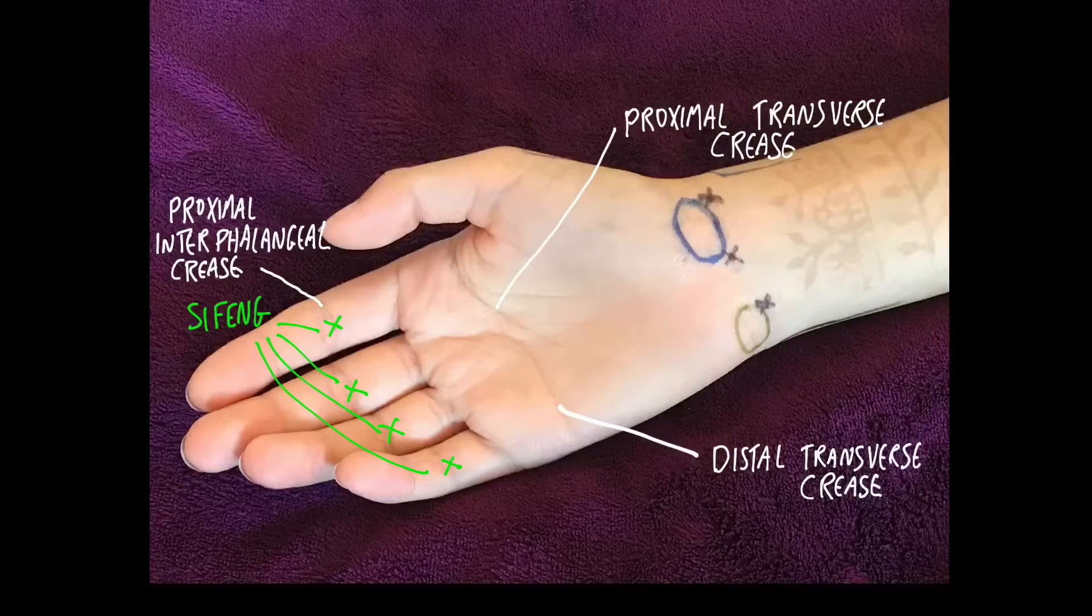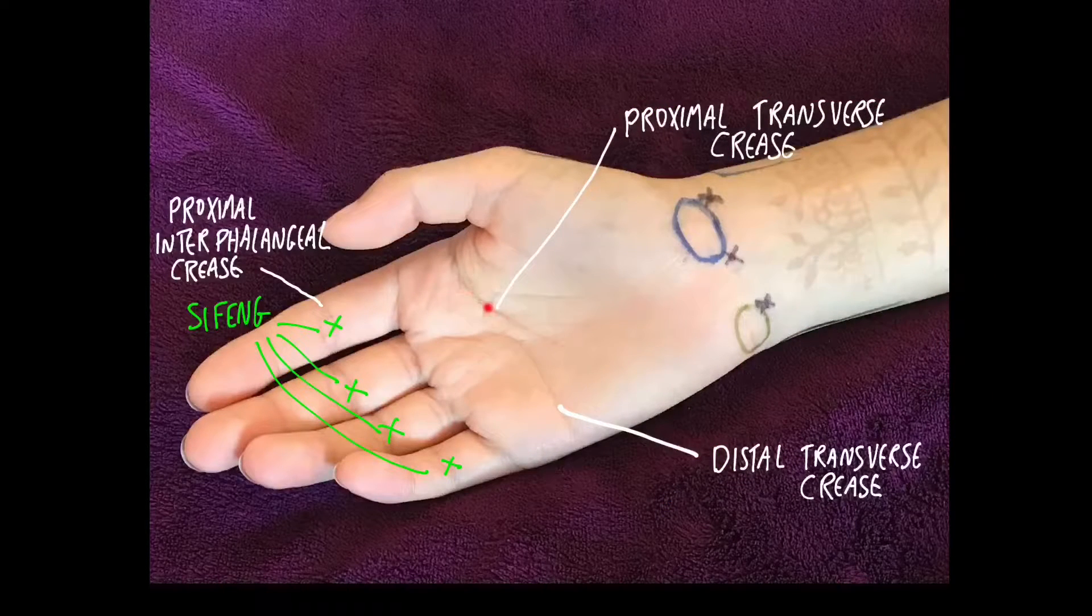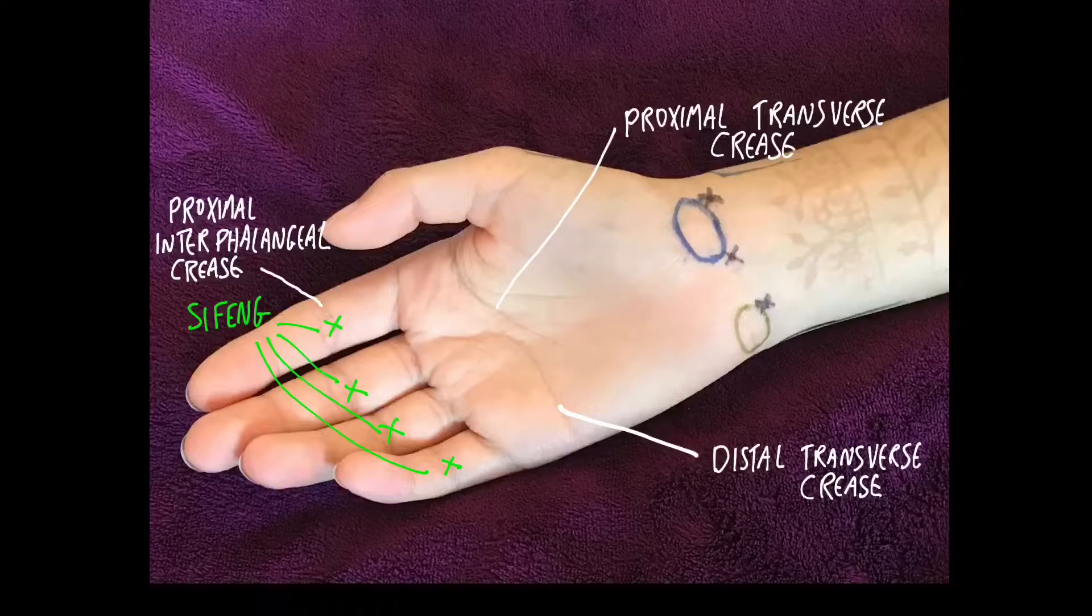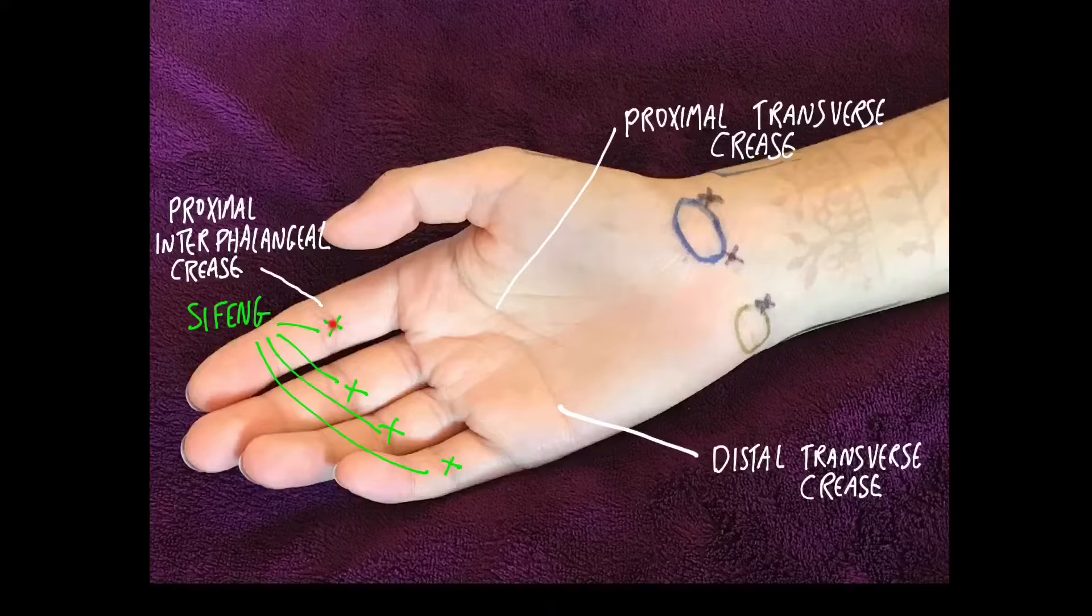A couple of other landmarks: we've got the proximal transverse crease and the distal transverse crease, and heart 8 is between the two. We've also got the interphalangeal creases on the fingers, and the extra point sifeng, the four seams, is found at the proximal interphalangeal crease, or if there are two, the deepest of the creases.